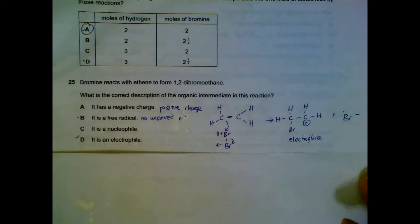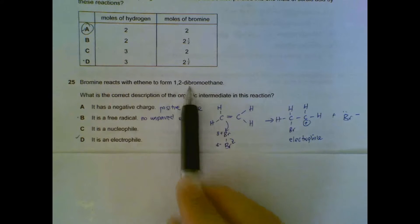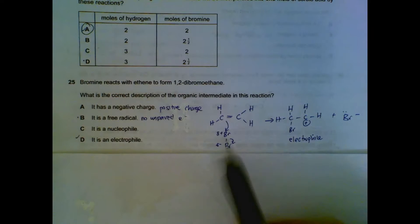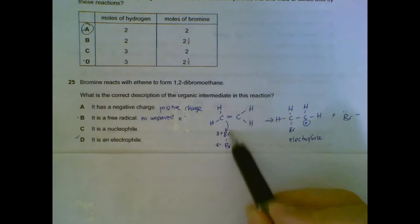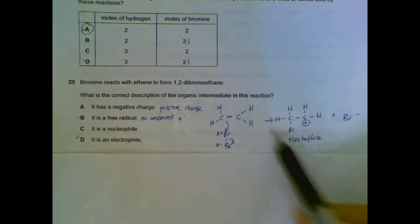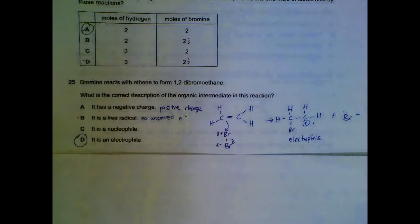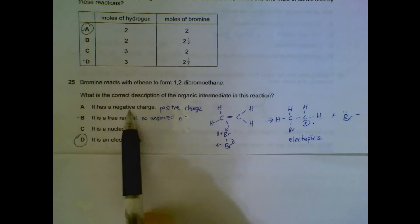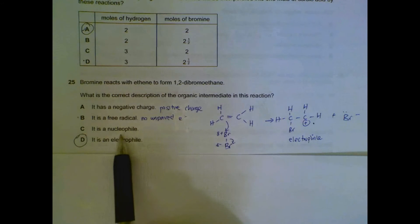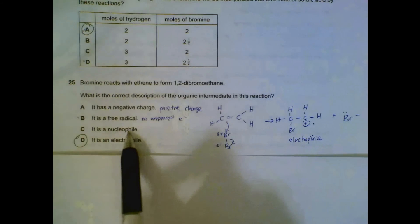Question 25. Bromine reacts with ethene, 1,2-dichloroethene. What is the intermediate? So at the start, there will be a bond forming and then a bond breaking here. We will get this intermediate which is positively charged. Because it's positively charged, it will be attracted to places where there are negative regions. It is actually an electrophile. So the intermediate is an electrophile. A is wrong - it should be positive charge. It does not have unpaired electrons, it's not a free radical. And C is wrong because it's an electrophile, not a nucleophile.